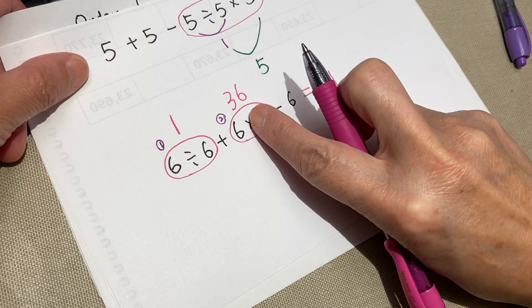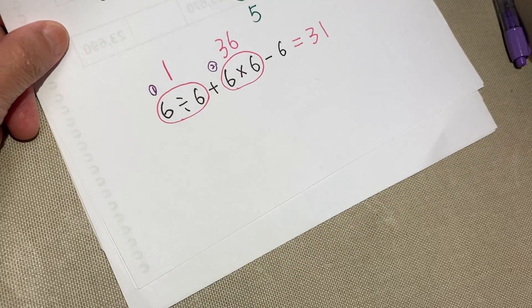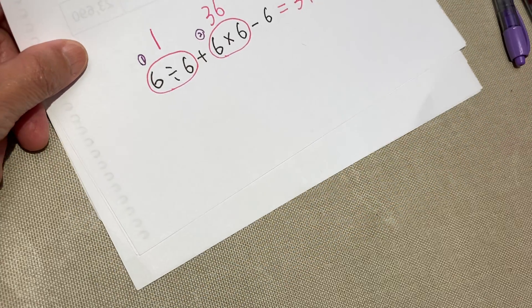Of course, you can do 36 plus one, 37 minus six. Okay. We do one more of this.